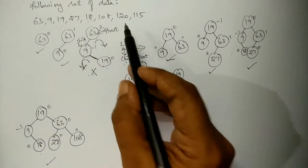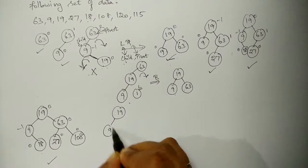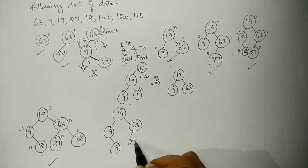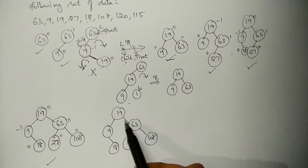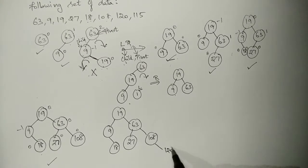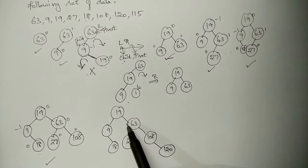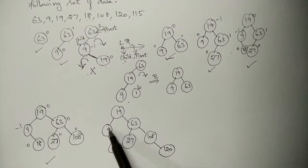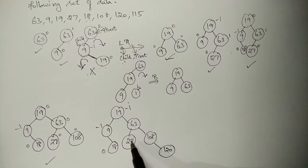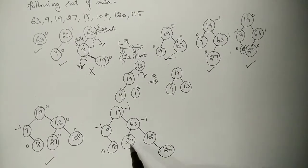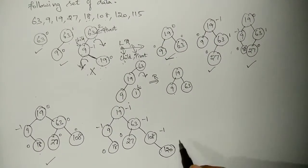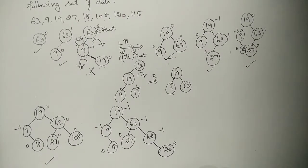Now I insert the next data, 120. So 120 is greater than 19, move right side, greater than 63, move right side, greater than 108. So it is inserted to the right side of 108. Now check the balance factor of all the nodes. For 19 it is 2 minus 3, which is minus 1. For 63 it is 1 minus 2, which is minus 1. For 108 it is 0 minus 1, which is minus 1. And for 120 it is 0. So the tree is already balanced.